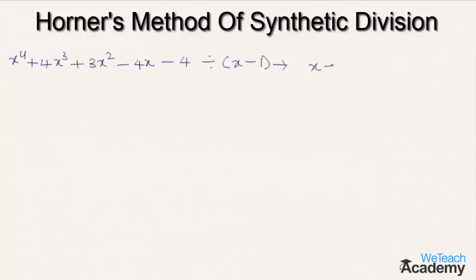So as x - 1 is the divisor, we get the equation x - 1 = 0. By transferring -1 to the right-hand side, we get the value of x as 1, and here 1 would be the common multiplier.